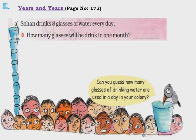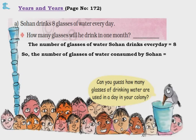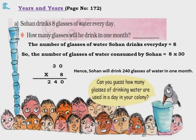Question A: Sohan drinks 8 glasses of water every day. How many glasses will he drink in 1 month? In 1 day he drinks 8 glasses. 1 month means 30 days. So 8 into 30 — 8 zeros are 0, 8 threes are 24 — that gives 240 glasses of water in 1 month.